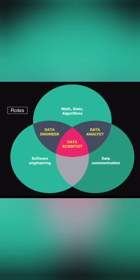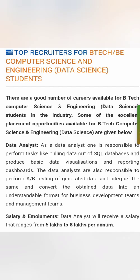Now the roles. If you have studied data science, then based on your different areas of knowledge and strength, you can get different roles. For example, math, statistics, and algorithms are one part; software engineering is another part; and data communications is another part. If you are good at data communications, you can become a data scientist or data analyst. If you are good at software engineering, you can become a data engineer or data scientist. But if you are good at math, statistics, and algorithms, then you can become all three: data engineer, data scientist, and data analyst.